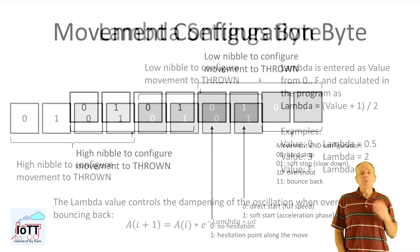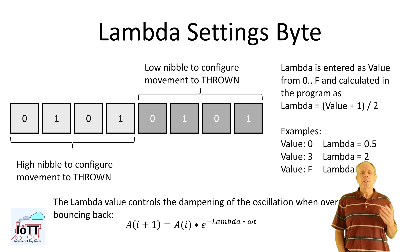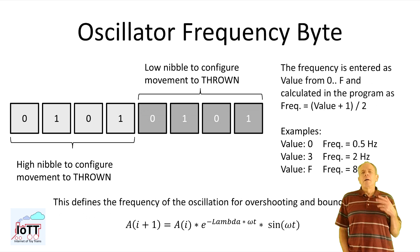The next two bytes provide the configuration data for the oscillation if it is used. The first is the lambda factor that defines the dampening of the oscillation. Higher values mean more dampening and the data is encoded to save memory space. Each nibble takes a value from 0 to 15 or hex f, resulting in a lambda factor from 0.5 to 8 with increments of 0.5. The second is the oscillation frequency.